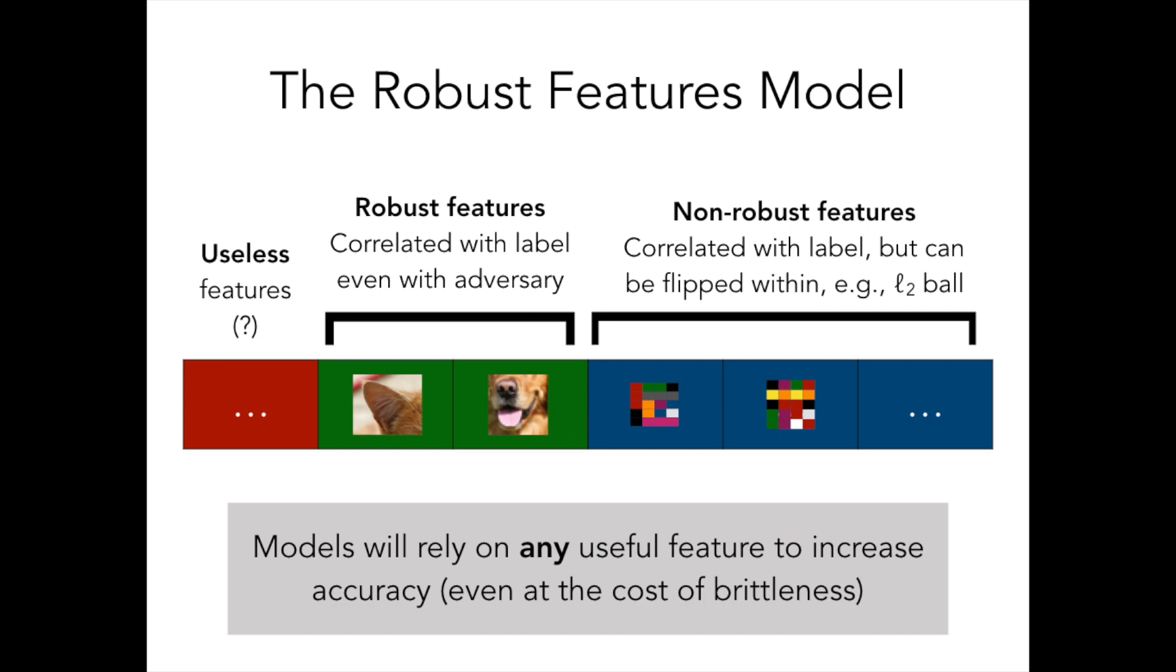The new training set we made in our experiment clearly had to have carried some information about how to distinguish dogs from cats. On the other hand, this information isn't something that humans can perceive, since to us the dataset just looked mislabeled.